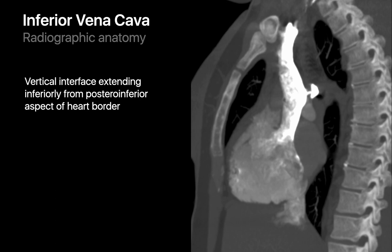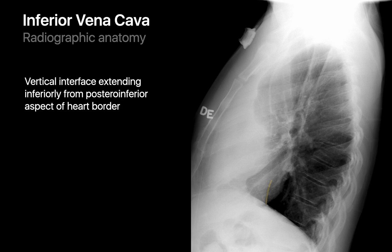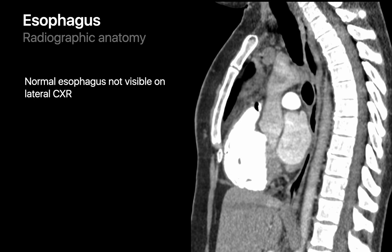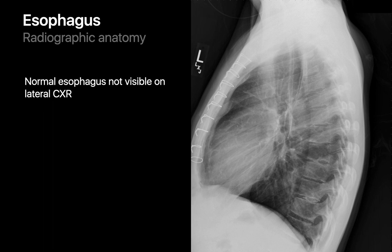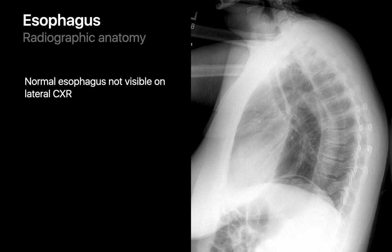The posterior wall of the IVC is often visible on a lateral chest radiograph as a vertical interface extending from the posterior inferior heart border to the hemidiaphragm. A normal esophagus will not be visible on a lateral chest radiograph as its margins abut mediastinal soft tissue, but it parallels the posterior tracheal wall. It's important to know this so you'll recognize when the esophagus is abnormal, as in the case of an air-filled markedly dilated esophagus immediately posterior to the trachea.